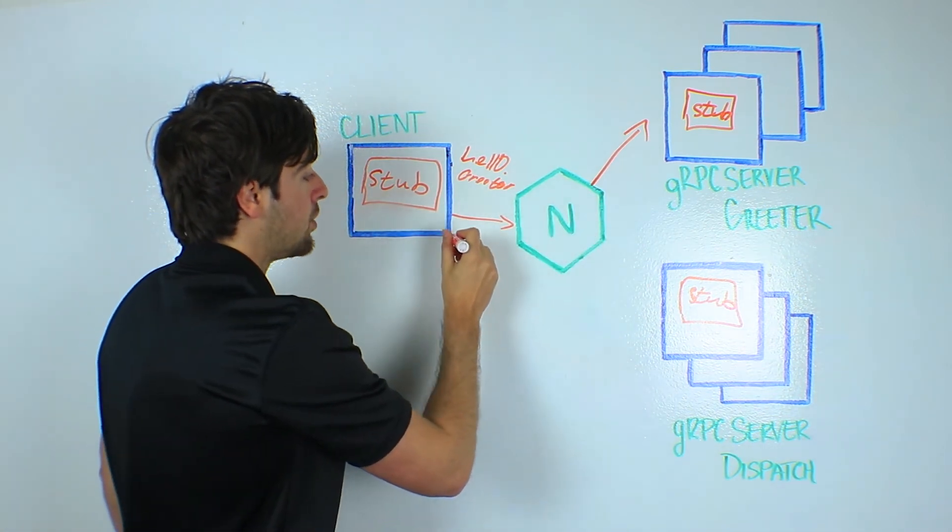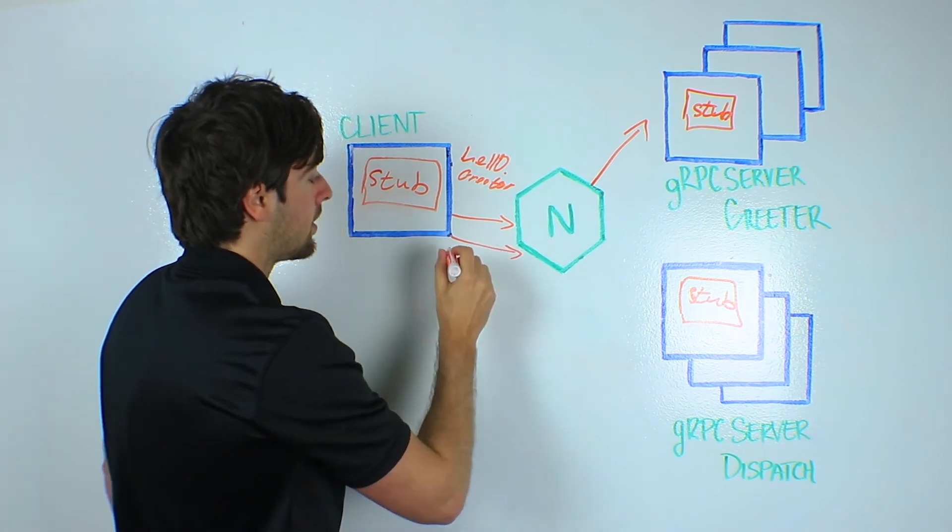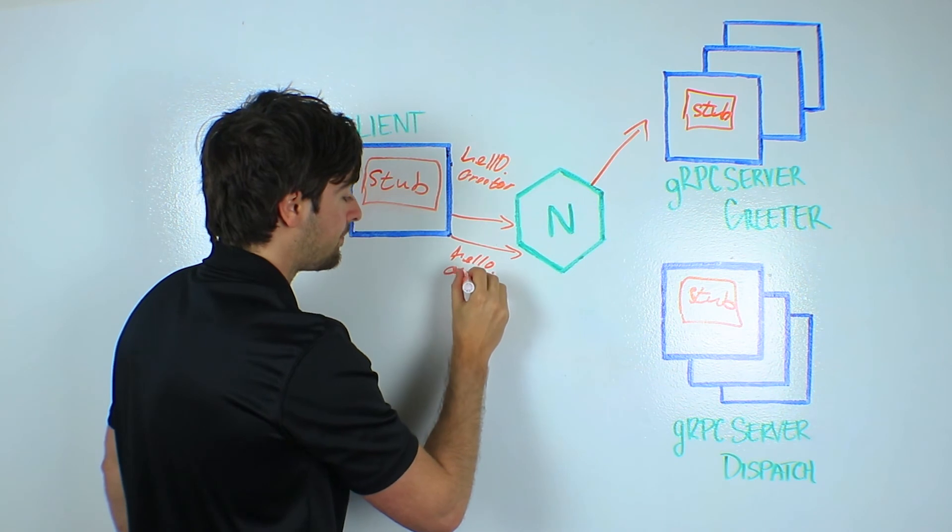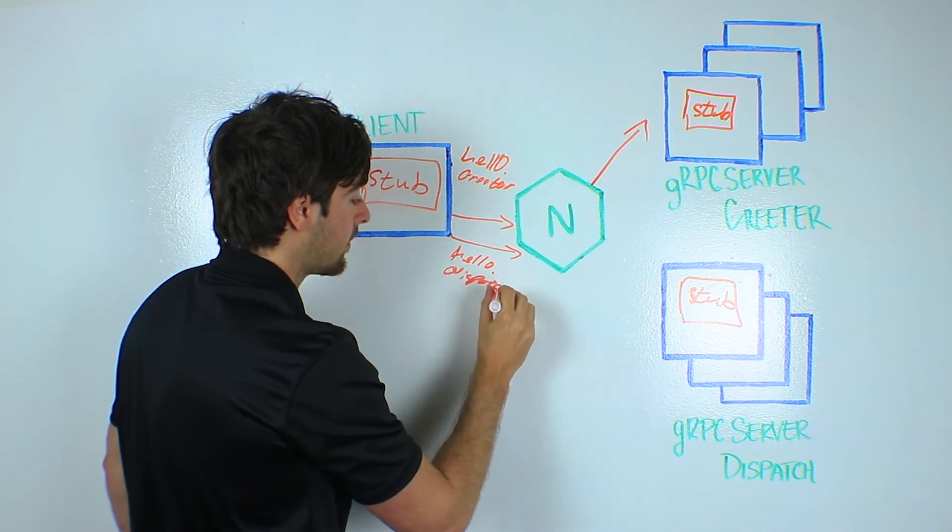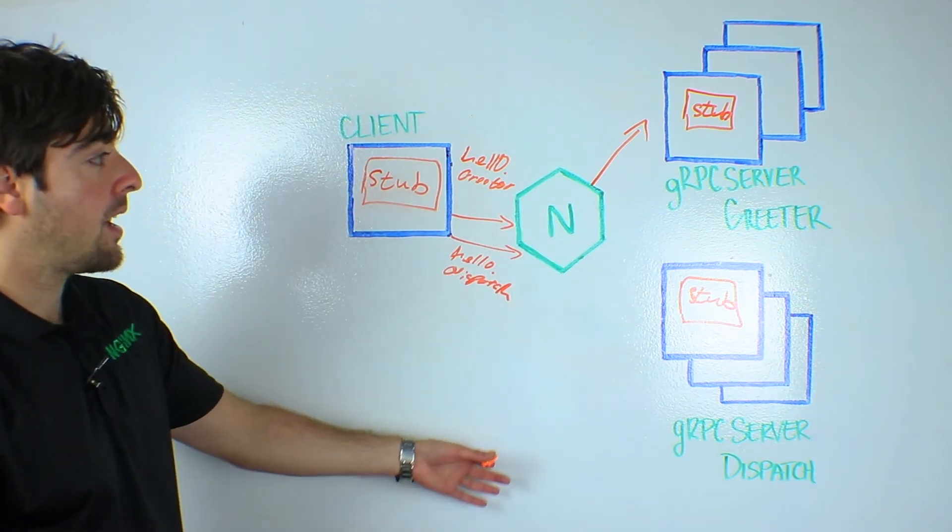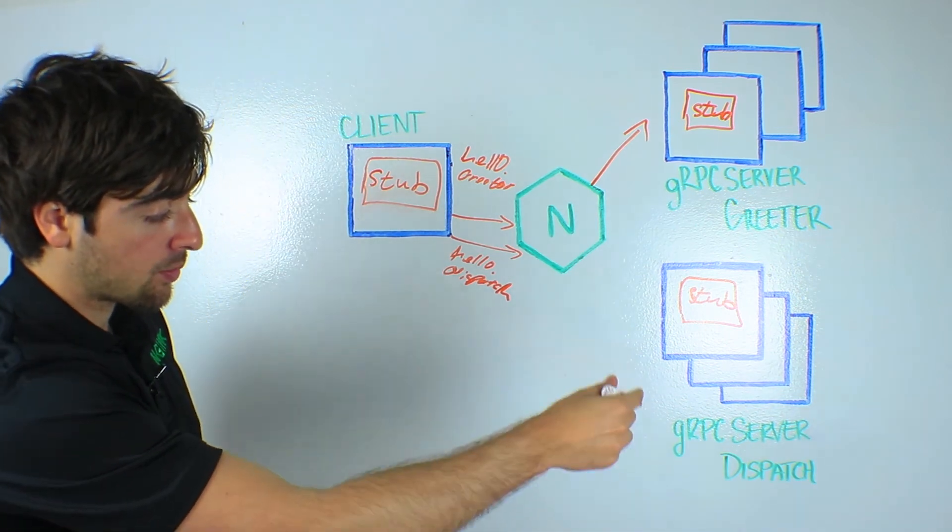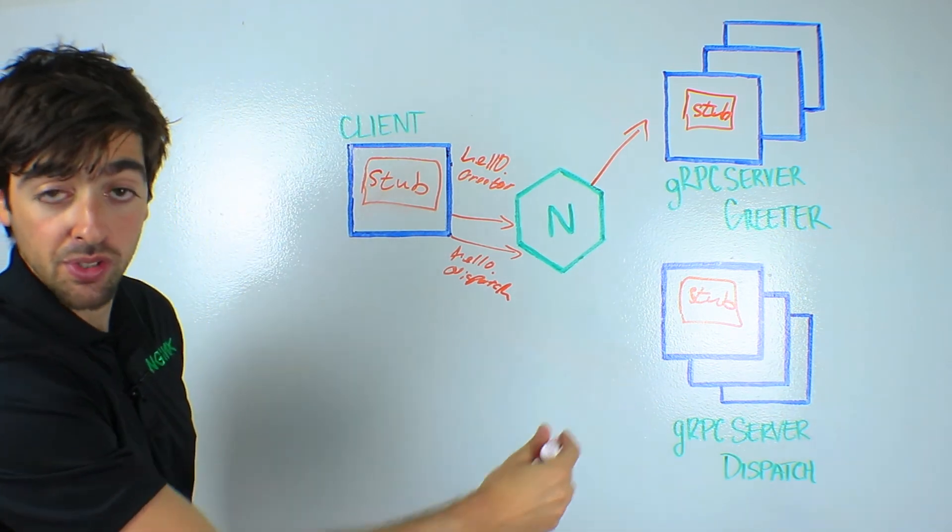Whereas if the client would use another service, say hello package name, service dispatch, then Nginx can go ahead and route the request to the dispatch upstream and load balance connections to the server pools in that upstream.